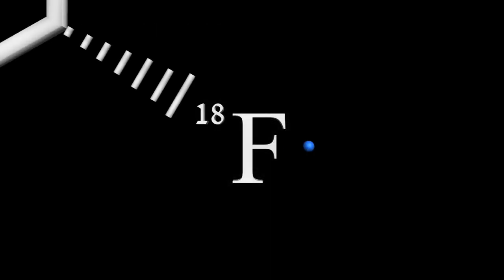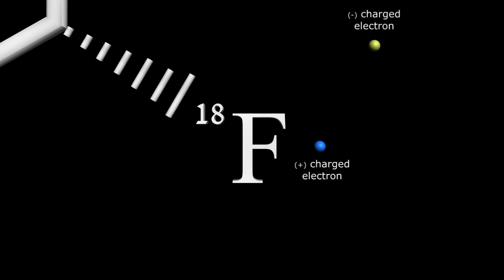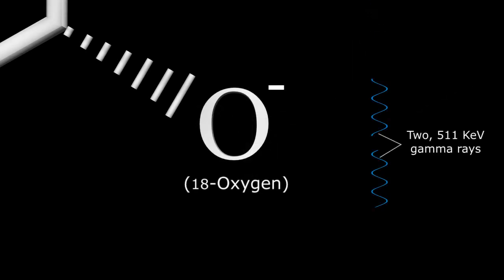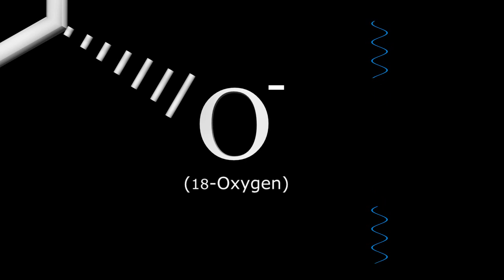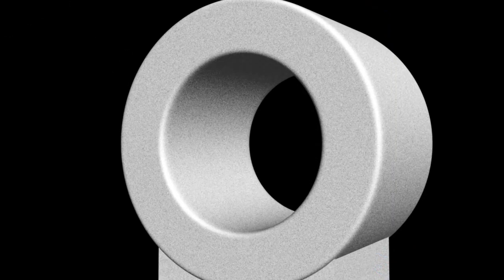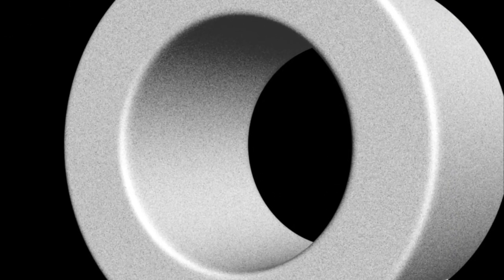The radioactive fluorine atom emits a positron, or a positively charged electron. The positron is antimatter and therefore quickly collides with a nearby negatively charged electron, annihilating both particles and producing two 511 kiloelectron-volt gamma rays which travel away from each other at 180 degrees. The PET, or positron emission tomography, scanner can detect these gamma rays and determine where they came from in the body.